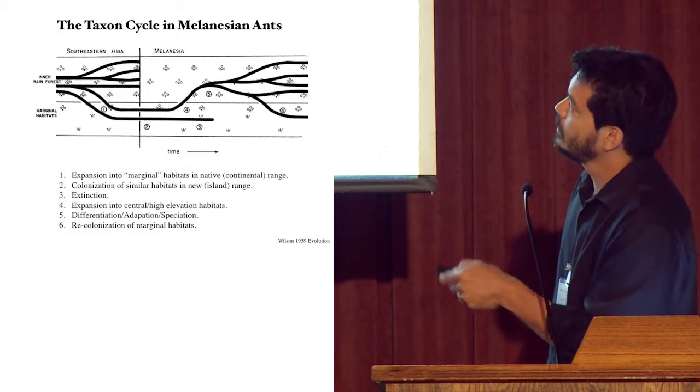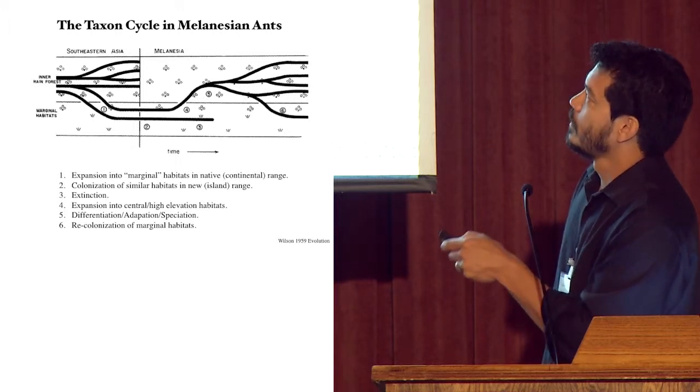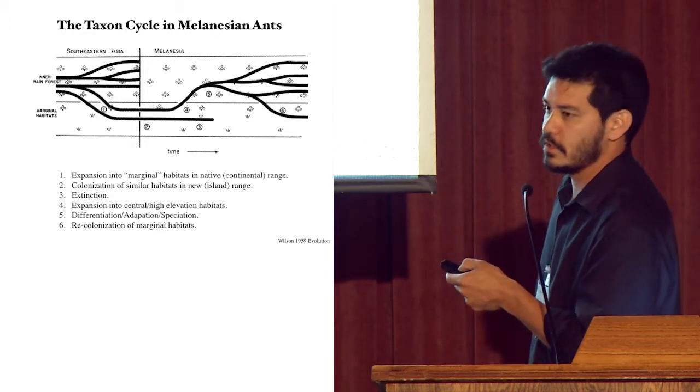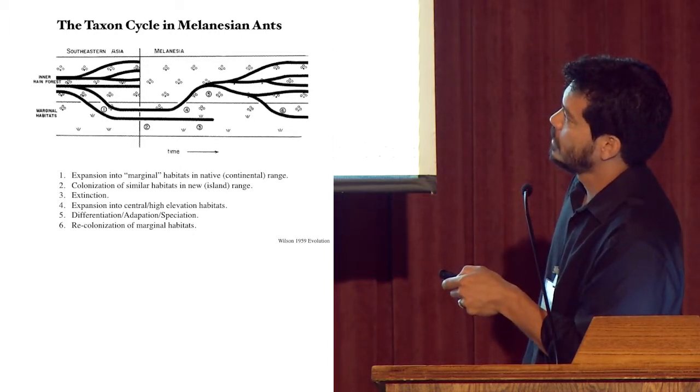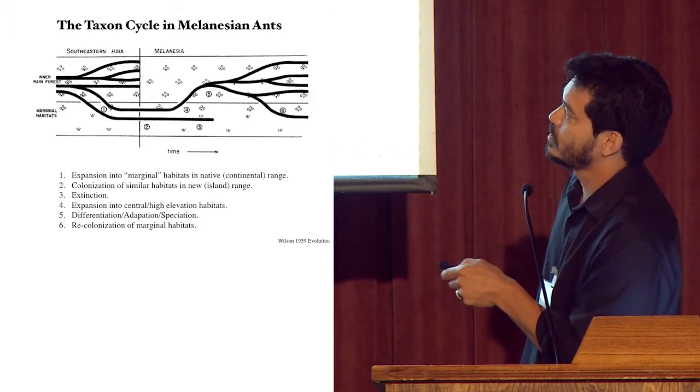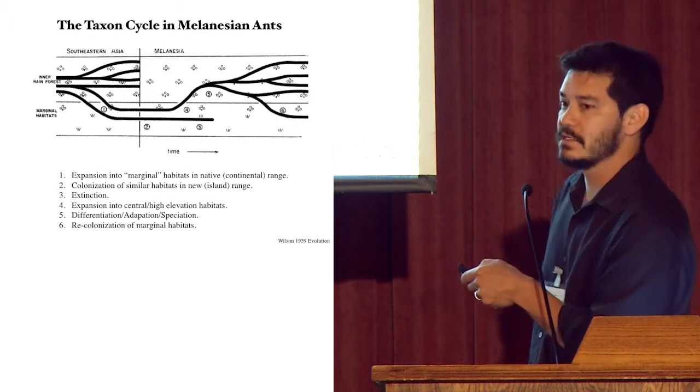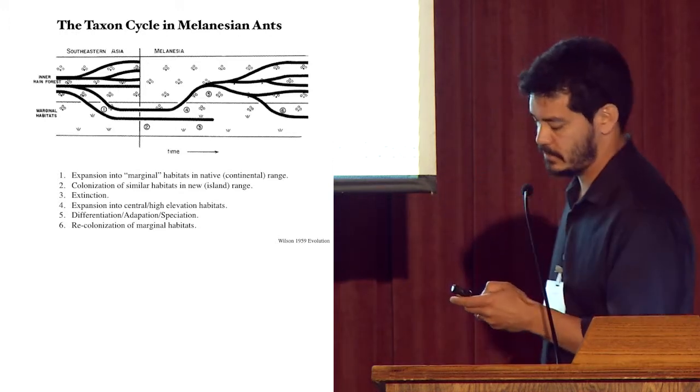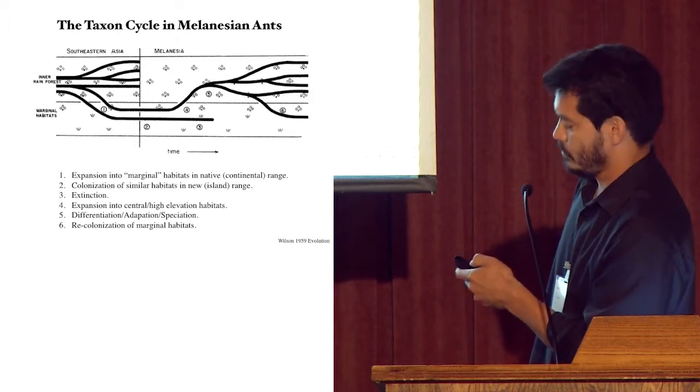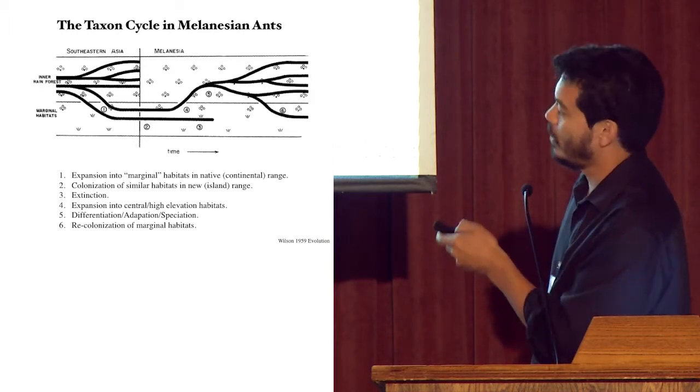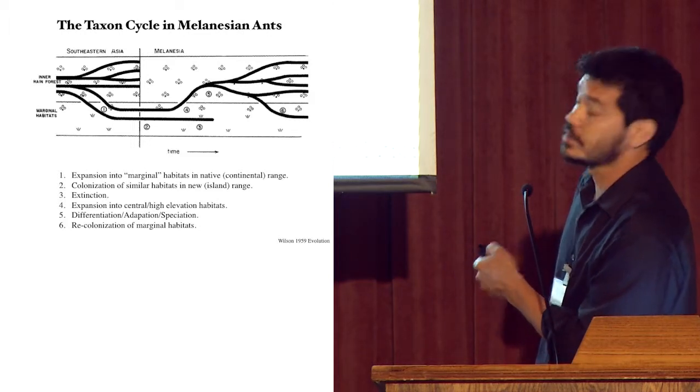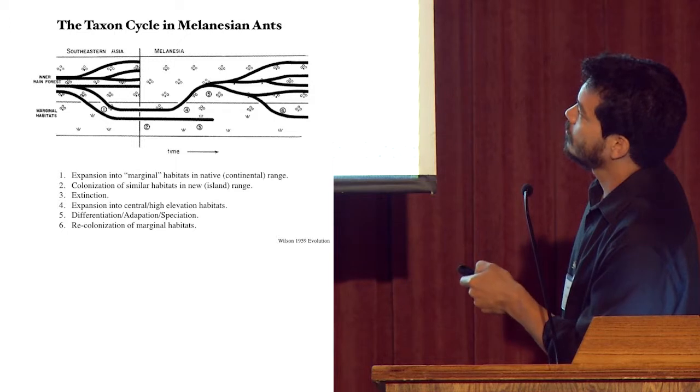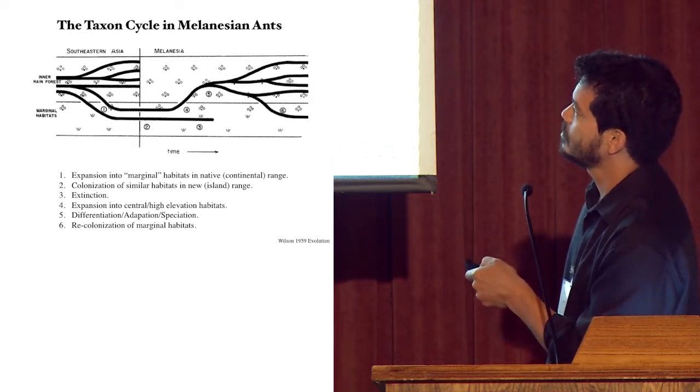So this is how the taxon cycle works. For ants, and other taxa presumably, in Southeast Asia, you have an ecosystem that has a variety of different species that co-occur there. It serves as the source for colonists moving out into the world. You have some species within this habitat that evolve or adapt to what he calls marginal habitats. These are things that are typically disturbed habitats, ephemeral habitats, things like riparian areas, coastal areas, more recently human disturbed habitats. So these species acquire adaptations to these marginal habitats.